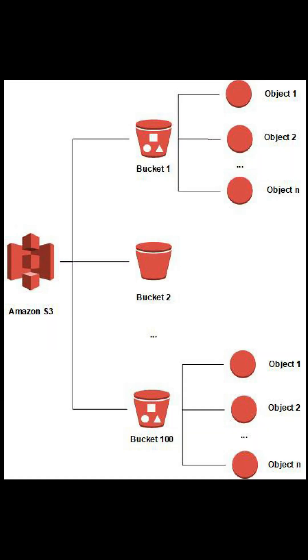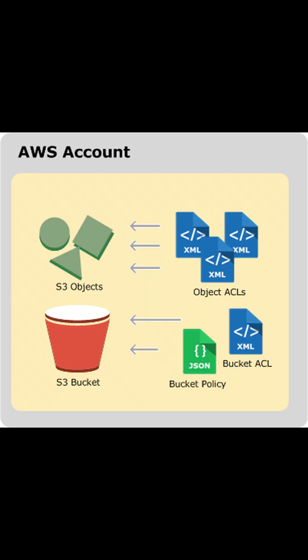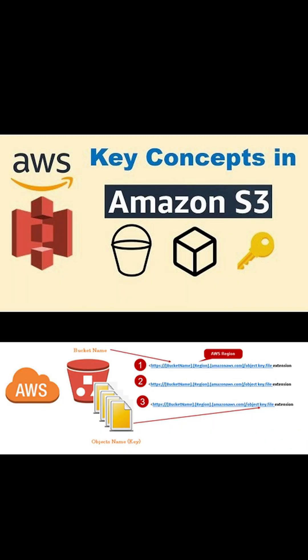You upload your data to that bucket as objects. In Amazon S3, each object has a key, which is the unique identifier for that object within the bucket. Every object in a bucket has exactly one key.